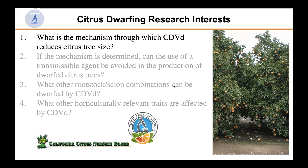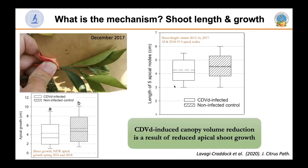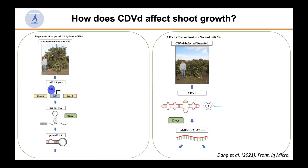So, what is the mechanism? To determine what makes smaller canopies, we looked at shoot length and growth. What we found when we measured the length of five apical nodes and the net growth of apical shoots was that both of these measures were reduced in citrus dwarfine viroid infected trees. We drew the conclusion that the citrus dwarfine viroid induced canopy volume reduction is a result of reduced apical shoot growth — very logical, but we have data to support this. Having established the link between shoot growth and canopy volume, I then wanted to understand how this works at the molecular level.